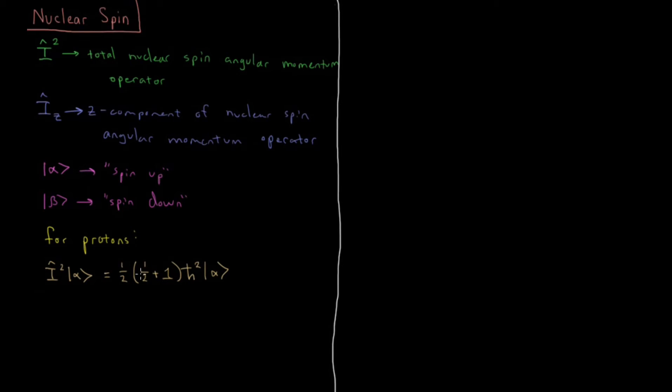The eigenvalue is 1/2 times 1/2 plus 1 times h bar squared, and 1/2 is the total spin quantum number for the alpha nucleus.